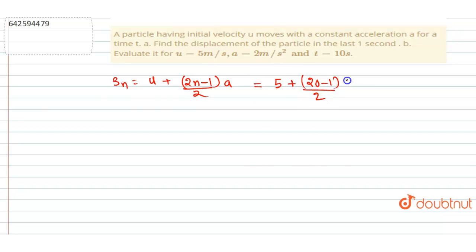Divided by 2 and acceleration, yeah. So if we will cut this, 5 plus 19 will be equals to 24 meter is the answer. Thank you.